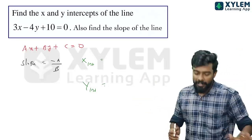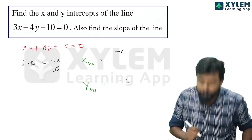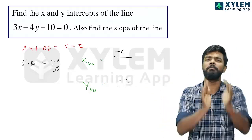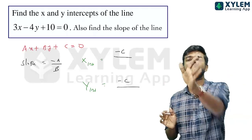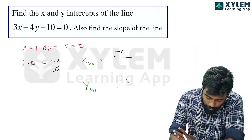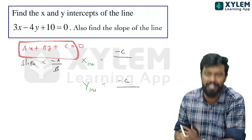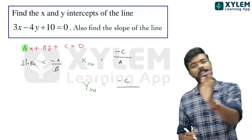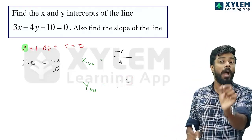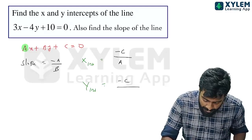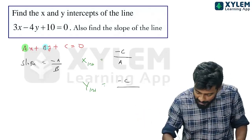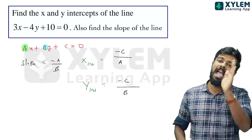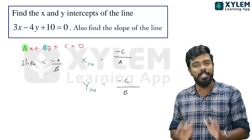So x-intercept is minus c by a, and y-intercept is minus c by b. The coefficient is divided accordingly.